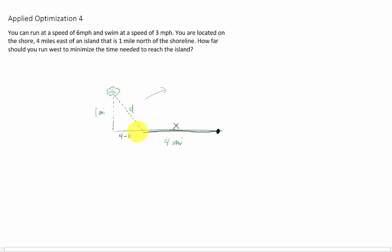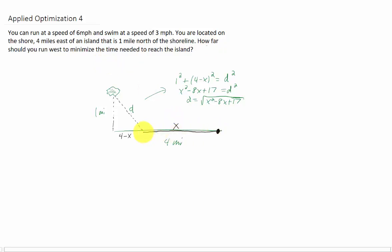Notice that we have a right triangle here. Pythagoras says that one squared plus (four minus x) squared equals d squared. If I foil, combine like terms, and take a square root of both sides, I get that d equals the square root of x squared minus 8x plus 17. We need to minimize the total time, and recall that time equals distance over rate.